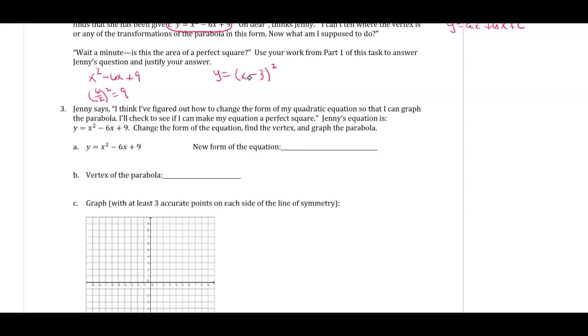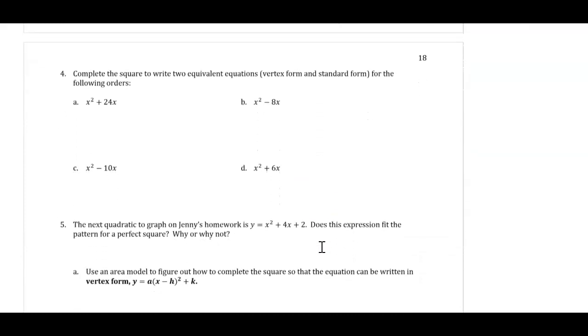Now it says, I think I've figured out how to change the form of my quadratics so that I can graph the parabola. Jenny's equation is y equals x squared minus 6x plus 9. She wants to change it to this new form, which is what we've learned, vertex form, and graph the parabola. So y equals, we said that this is equivalent to (x - 3) all squared. And right away now, we know the vertex would be at (3, 0), and that I'd be able to go ahead and graph it no problem.